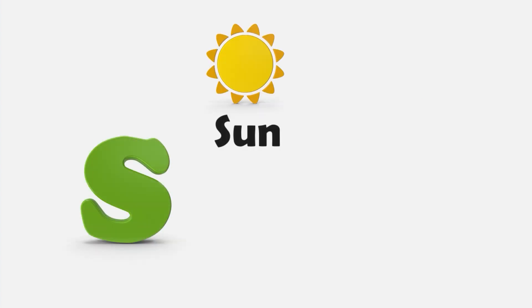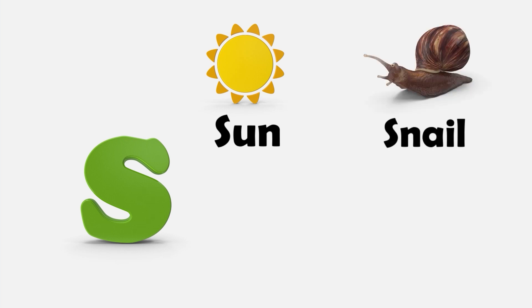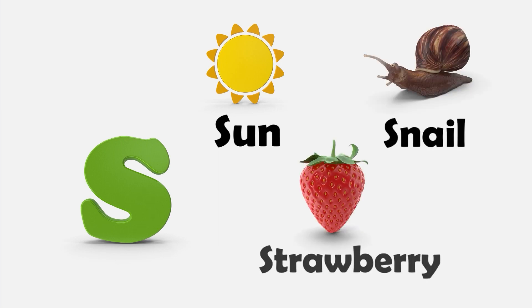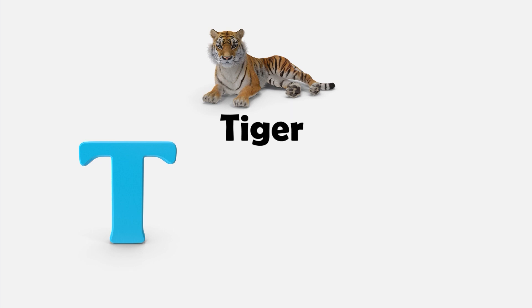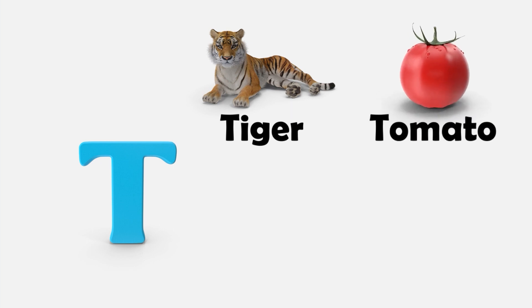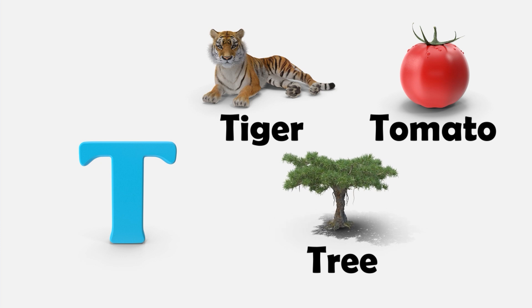S — S is for Sun. S is for Snail. And S is for Strawberry. T — T is for Tiger. T is for Tomato. T is for Tree.